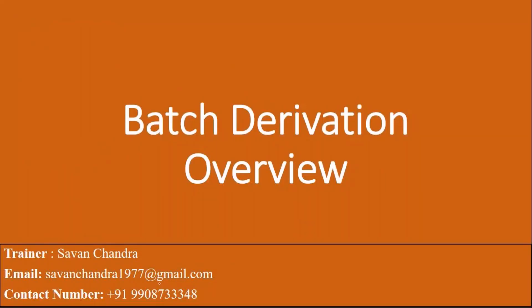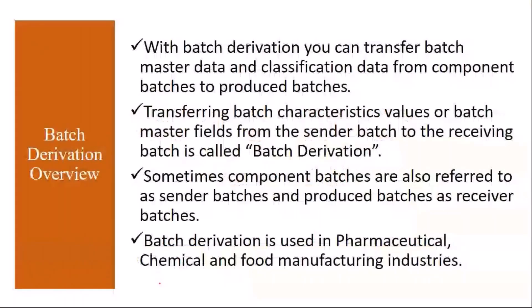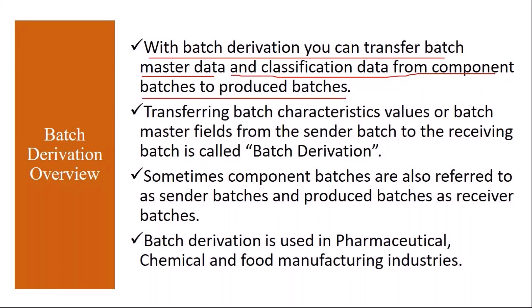With batch derivation, you can transfer batch master data and classification data from component batches to produced batches. Normally this batch derivation is used to transfer data like manufacturing date, expiry date, or some other data from the batch master of a component to the header material. To produce a product, you use some components, and the batch data of those components you can transfer to the produced material — the header material.